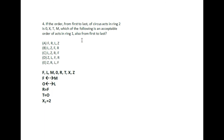Second question: if the order from first to last of the circus acts in ring 2 is O, X, T, M, which of the following is an acceptable order of acts in ring 1, also from first to last? We can see that ring 2 has O first, and we need to determine what acts go in ring 1 in what order, checking compatibility with the constraints.